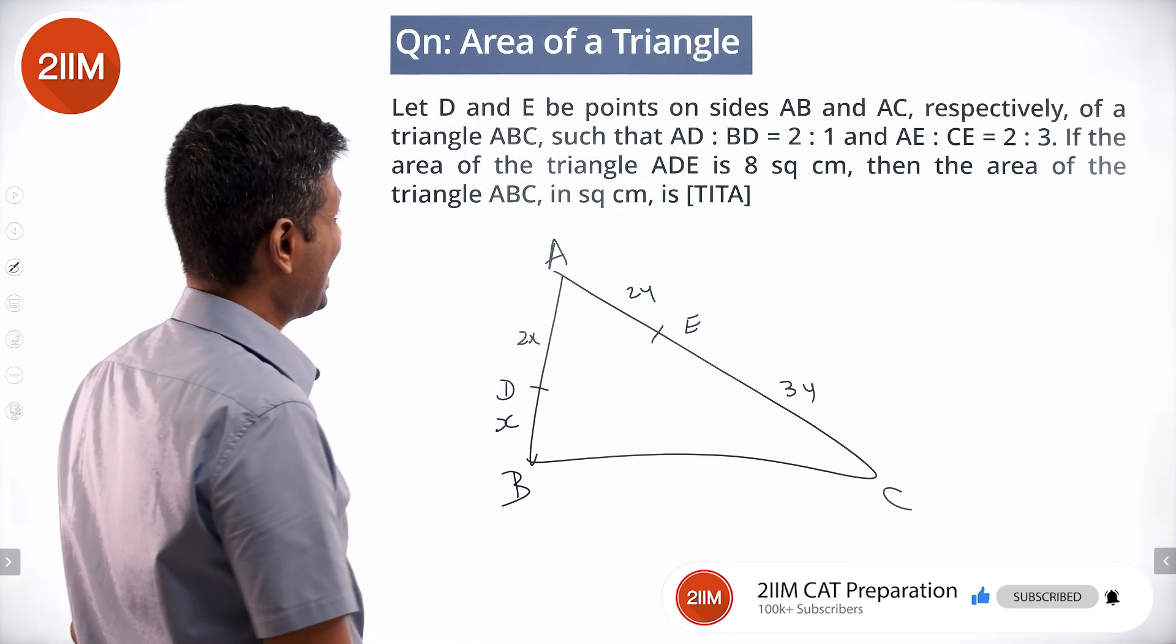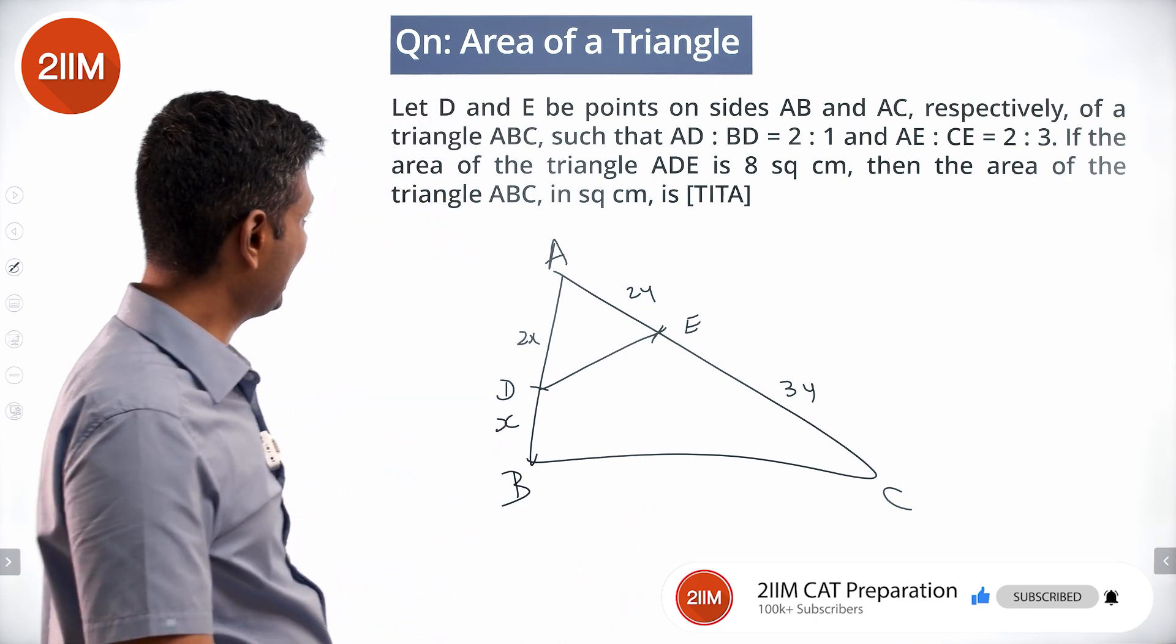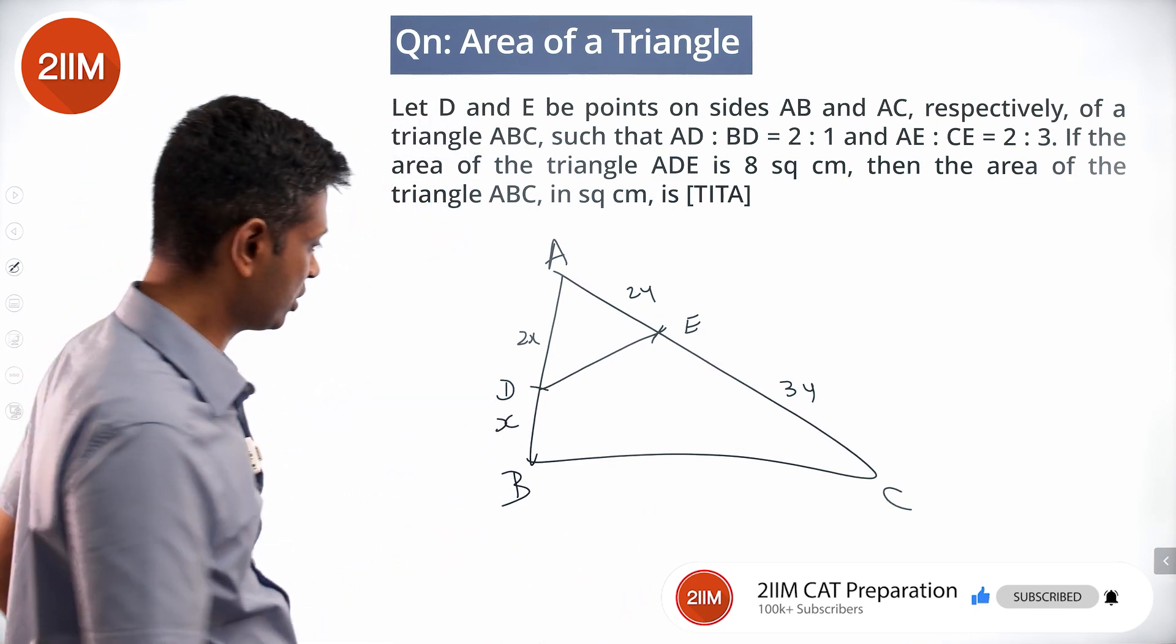Area of triangle ADE is 8 square centimeters. Find the area of triangle ABC. Nice simple question.